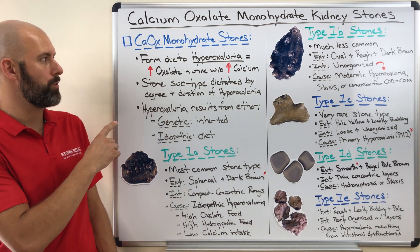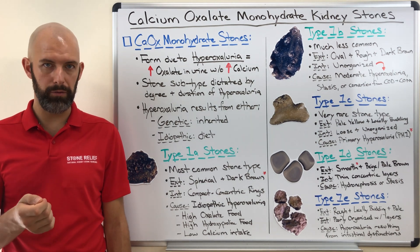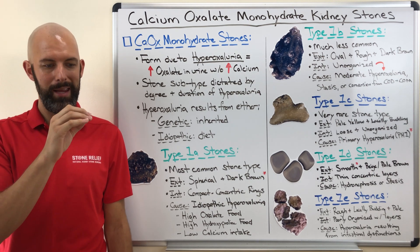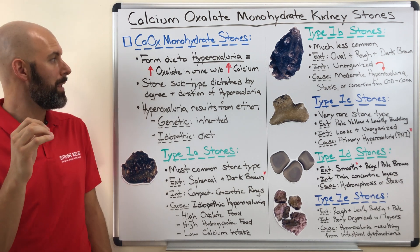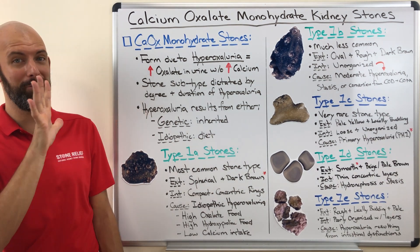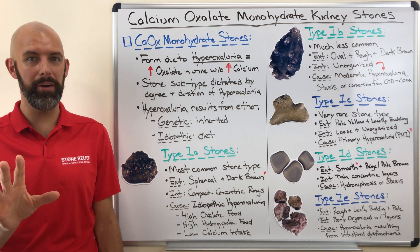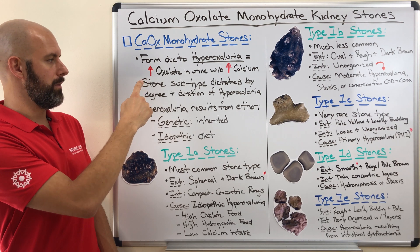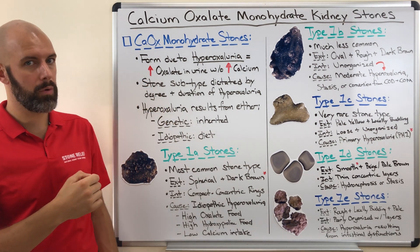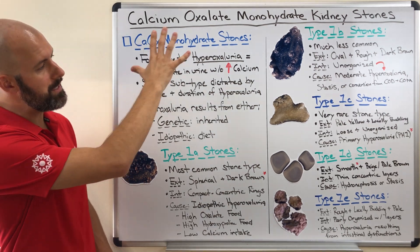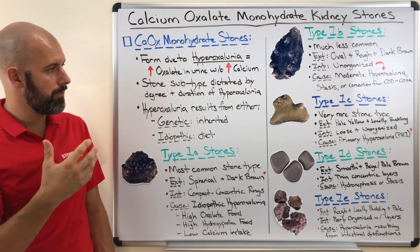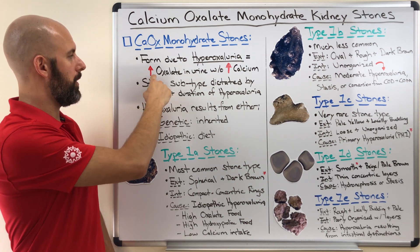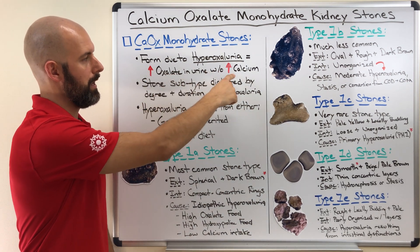This particular type of stone forms due to hyperoxaluria, which is a condition in which there is an elevated level of oxalate ions in your urine without a concurrent increase of calcium. This stone type has five different subtypes that vary in the way the stone looks and the reason for which it forms, and they are all linked to the degree and the duration of hyperoxaluria. The degree refers to the severity — the level of influx of oxalate ions into the urine stream without a concurrent calcium increase.